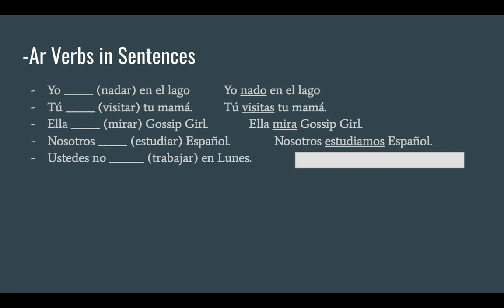Last one for the AR verbs: 'trabajar' in the ustedes form. We take off the AR and we're left with 'trabaj'. The ending for ustedes — same as ellos or ellas, they're all in the same group — is 'an'. So trabaj plus an gives us 'trabajan'. Ustedes no trabajan en lunes — they don't work on Monday.